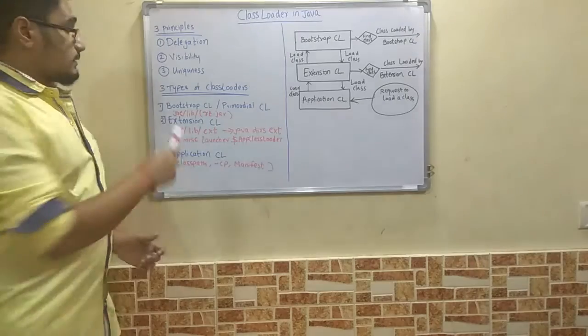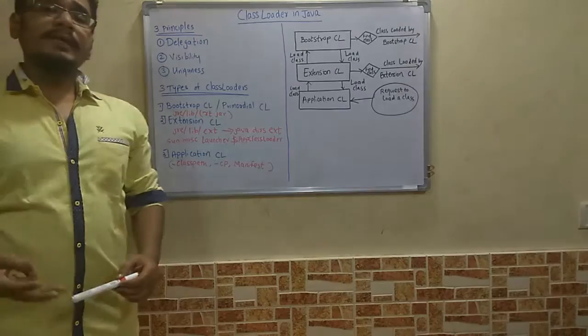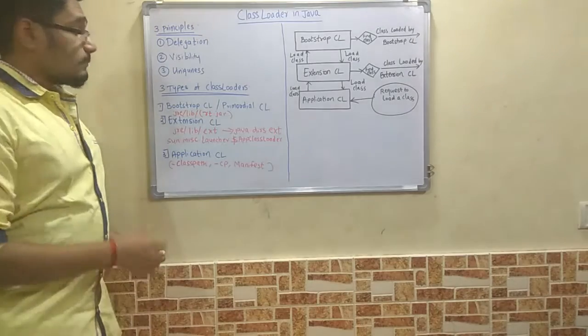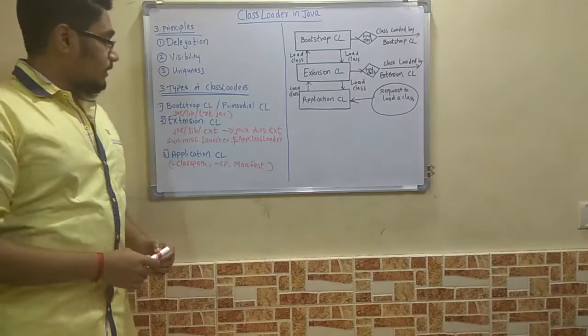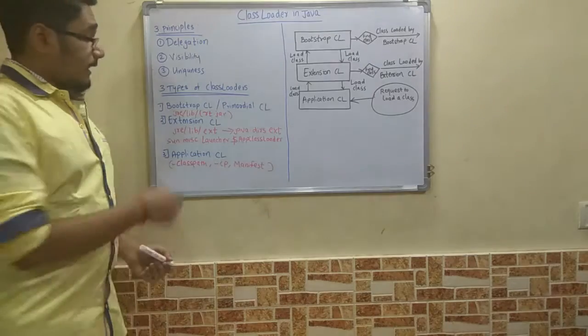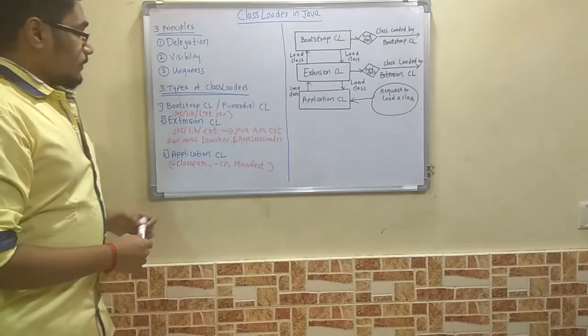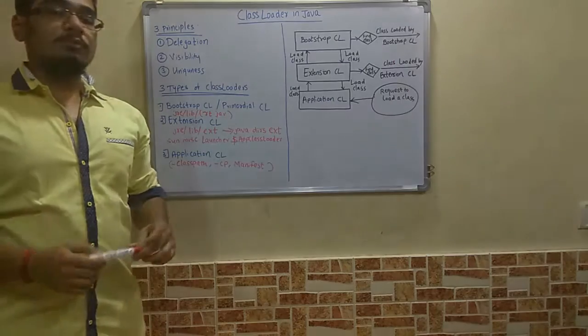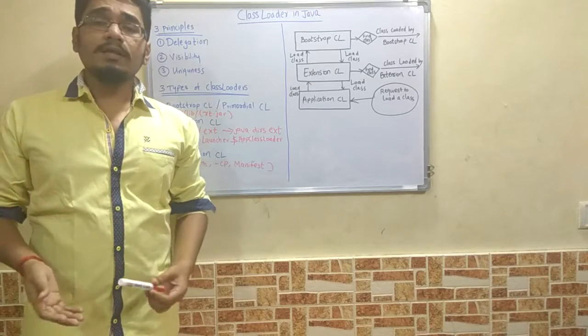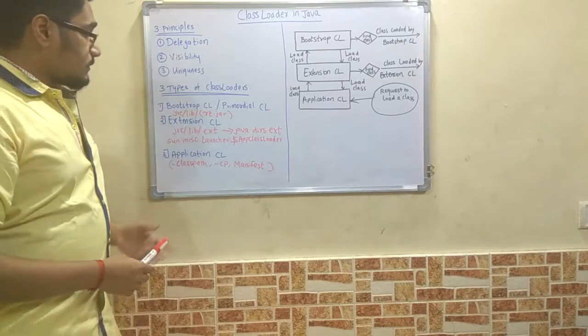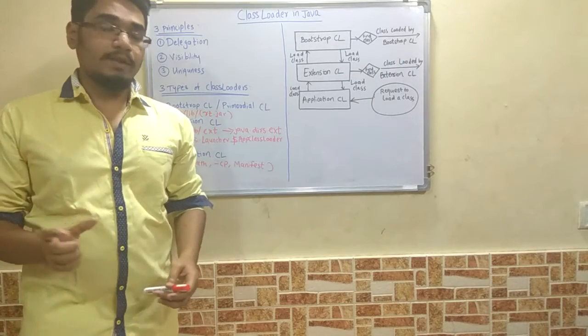Next we'll discuss the types of class loaders in Java. There are three main types: the bootstrap class loader or primordial class loader, extension class loader, and application class loader. Bootstrap class loader is the parent class loader of all class loaders. It consists of an rt.jar file, that is the runtime.jar file.